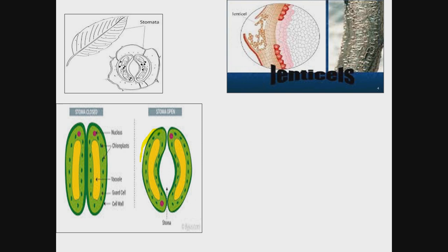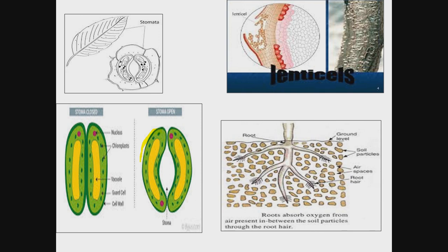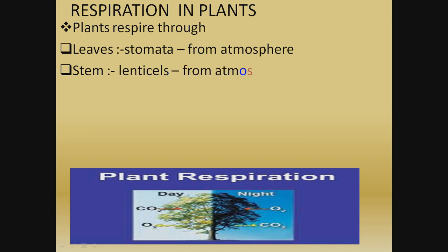Lenticels are permanent openings — they are not controlled and are always open — and respiration occurs through them. The root is present under the soil and takes in oxygen present in the air spaces between soil particles. Respiration in plants occurs: through leaves via stomata from the atmosphere, through stems via lenticels from the atmosphere, and through roots via the general root surface from air spaces in the soil.